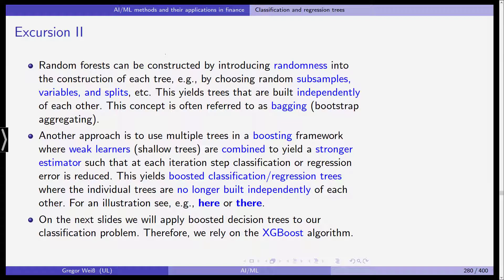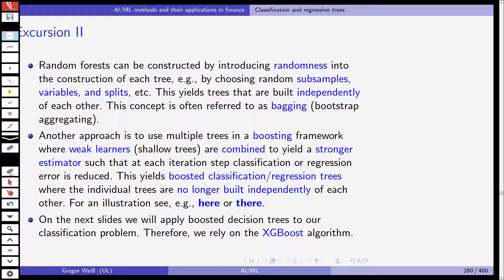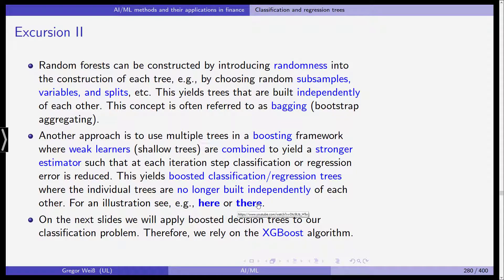Another approach is to use multiple trees in a so-called boosting framework. These are the regression errors and they are combined to yield a stronger estimator such that at each iteration step classification or the regression error is reduced and this will yield so-called boosted classification trees or regression trees in which the individual trees are no longer built independently of each other. To see an illustration I would advise you to watch these two YouTube videos. This one is the first and this one is the second. There the principles of boosting and bagging are explained quite nicely actually.